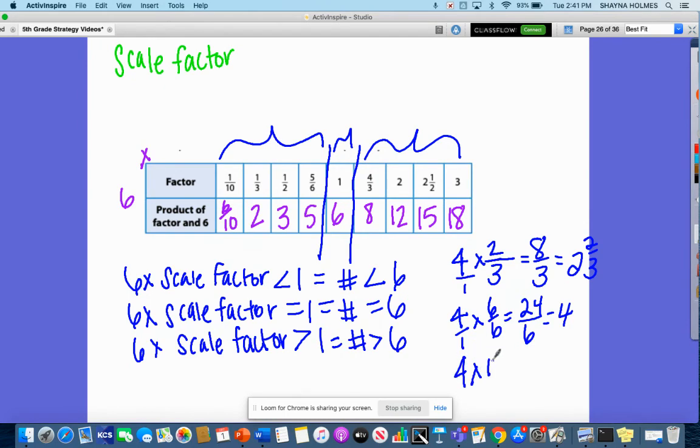Four times, let's do 17 thirds. Four times 17 thirds. That is four times 17, that's 68 over three. And that would be 66 and two thirds, 22 and two thirds is obviously larger than four.